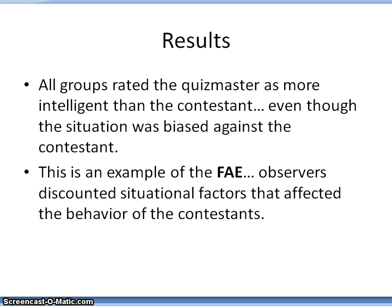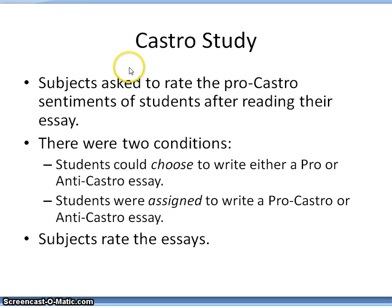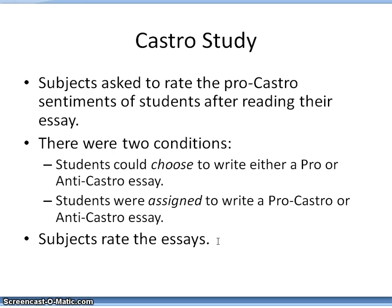Here's another classic study: the Castro study. Subjects were asked to rate the pro-Castro sentiments of students after reading their essay. There were two conditions. The judges either knew that students could choose to write a pro- or anti-Castro essay, or that the students were assigned to write a pro-Castro or anti-Castro essay. The subjects were the judges rating the essays, and what they had to do was make an attribution: did the writer of the essay have a pro-Castro attitude?